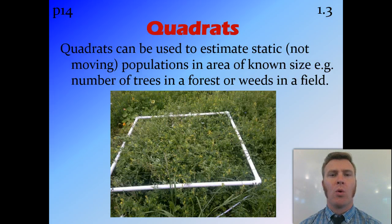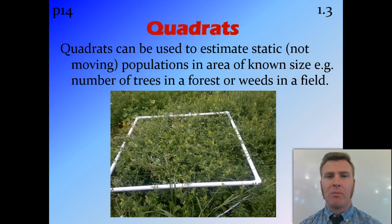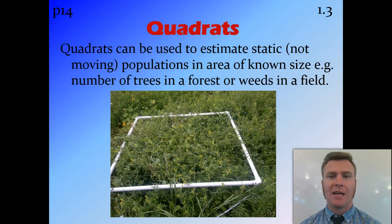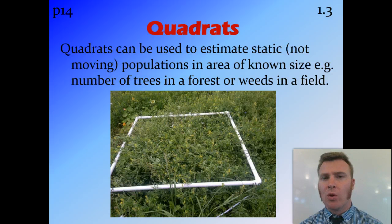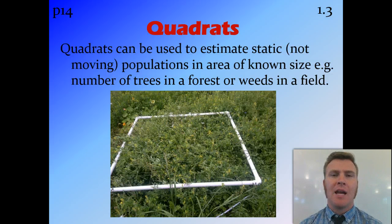One of those methods is by using quadrats. Quadrats are good for estimating static populations — populations that aren't moving, that stay in one place — such as trees, weeds, or barnacles: anything that is fixed in one position and isn't going to walk out of your quadrat while you're trying to count it.